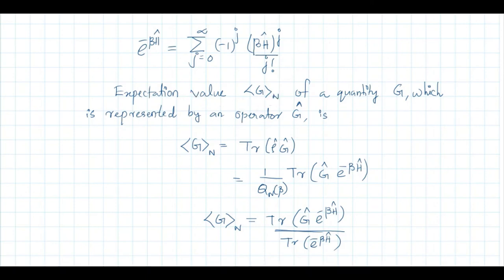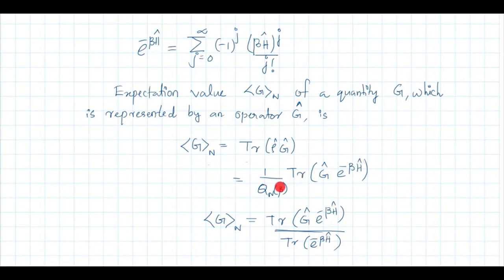The expectation value of quantity G for a canonical ensemble with fixed N is ⟨G⟩_N = Tr(ρ̂Ĝ) = Tr(Ĝ e^{−βĤ}) / Tr(e^{−βĤ}), since Q_N(β) = Tr(e^{−βĤ}). This is the procedure for finding the expectation value in terms of the density matrix for the canonical ensemble.